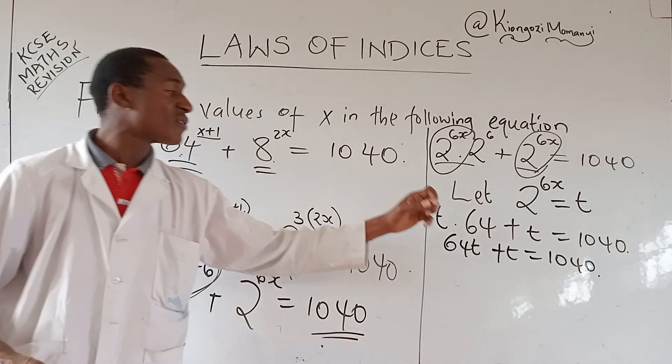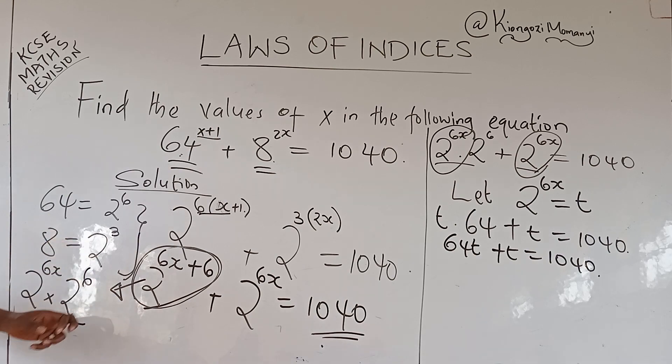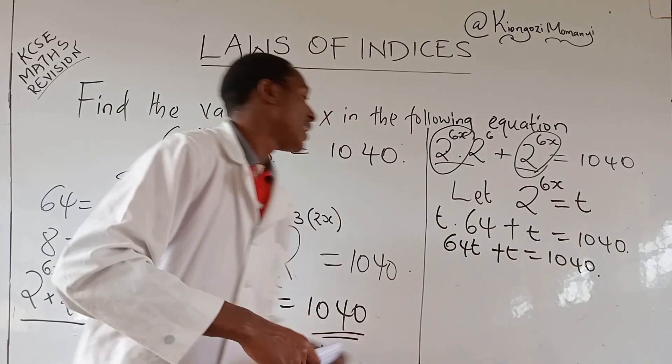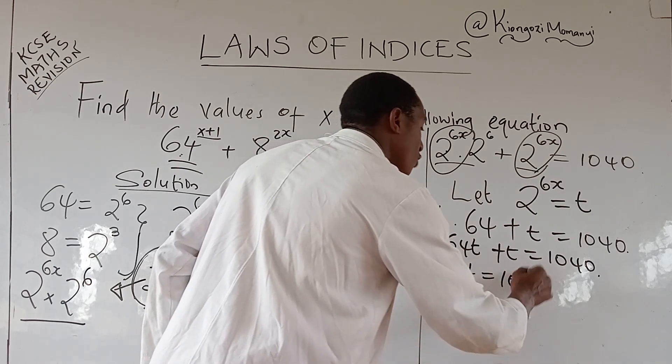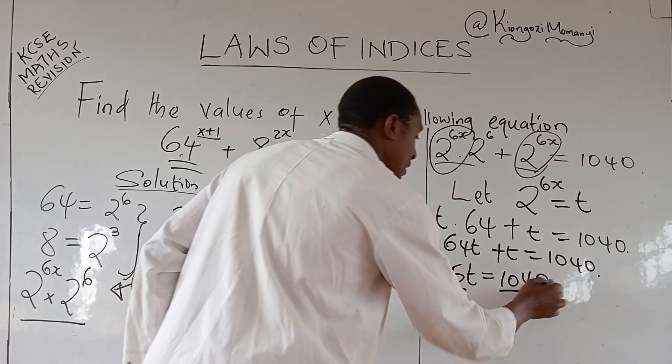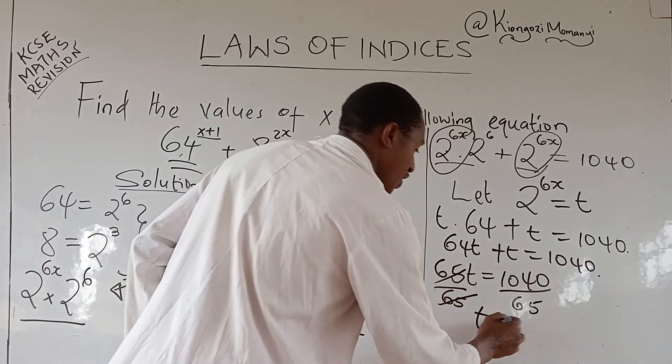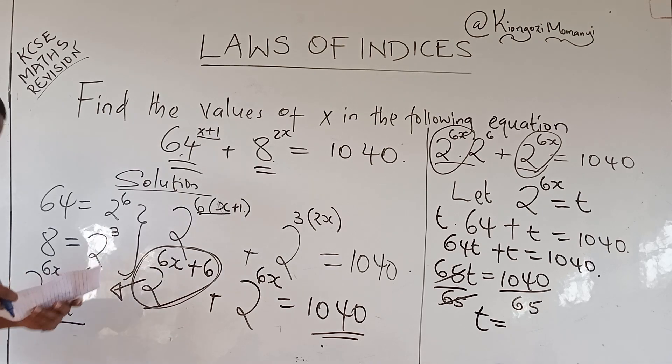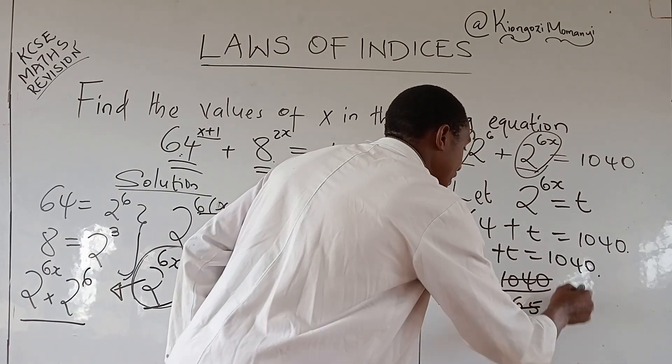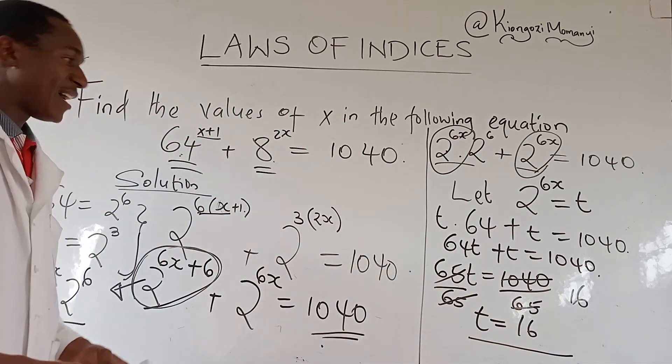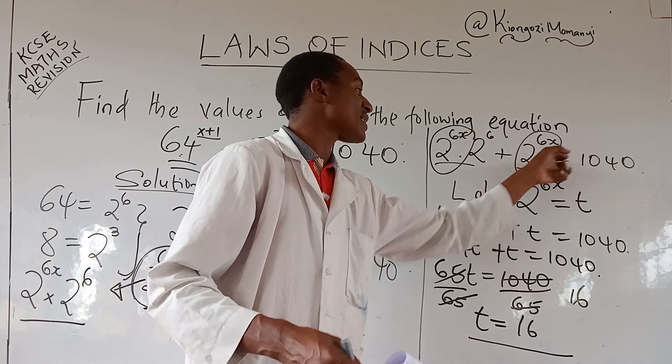So what we do, we shall solve for the value of t first, and then use that t to solve for the value of x. So we have 65t is equal to 1040, divided by 65 on both sides. So t, if you use your calculator well, you will get 16. But remember that t was 2 raised to power 6x. So we get back to solving for x now.